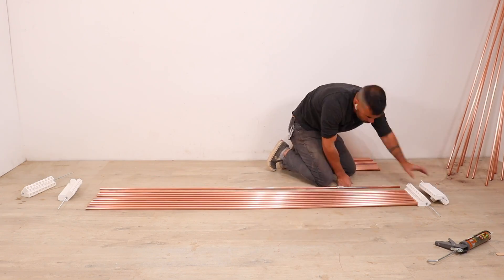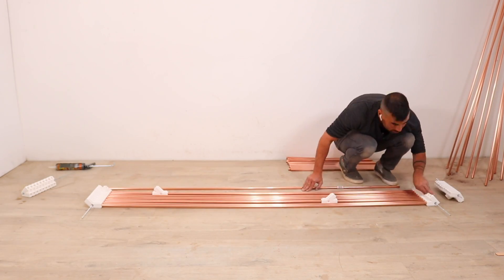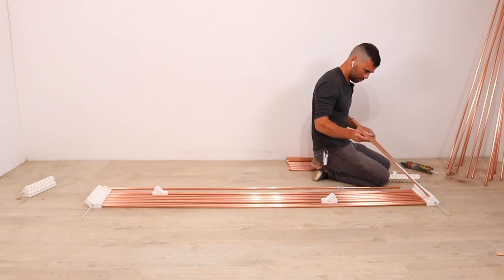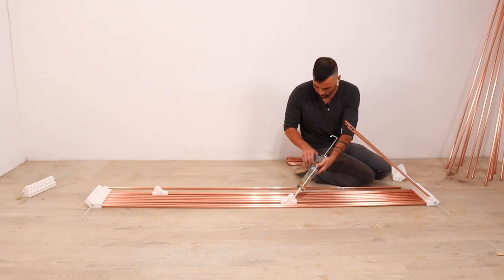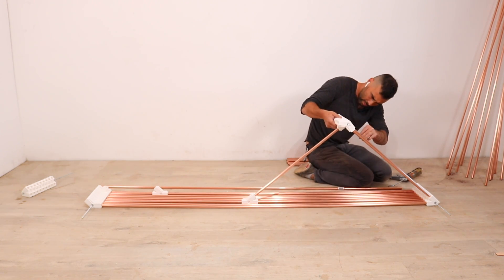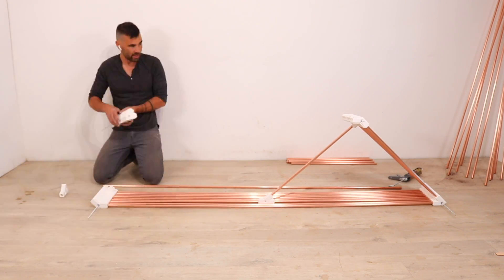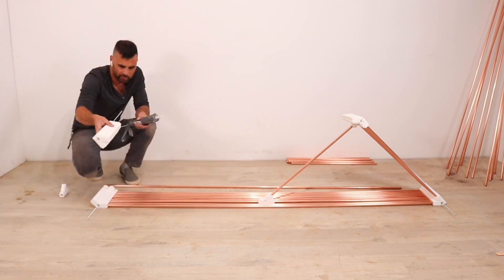I used Gorilla clear construction adhesive to glue the copper pipes into the brackets. Now if I was going to do this again I probably would have printed in holes in the brackets and then drilled holes in the copper and use screws to fix it. That way it'd be easier to take it apart and put it back together again. That being said the construction adhesive worked just fine.